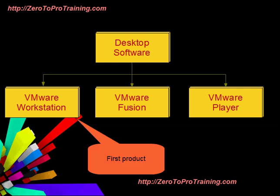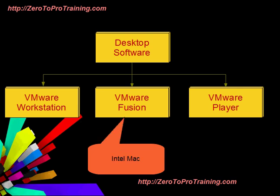VMware Workstation was the first product launched by VMware in 1999. It allows users to run multiple instances of x86 or x86-64 compatible operating systems on a single physical PC. VMware Fusion provides similar functionality for users of the Intel Mac platform.